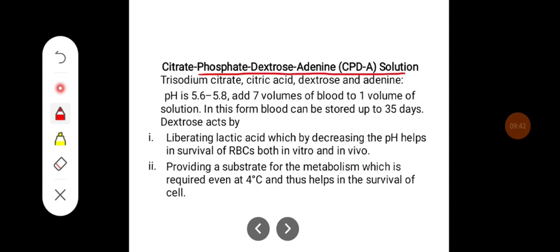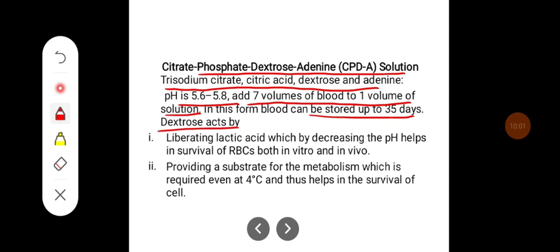Another form is Citrate Phosphate Dextrose Adenine (CPD-A) solution, containing sodium citrate, citric acid, dextrose, and adenine, with a pH between 5.6 and 5.8. You add 7 volumes of blood to 1 volume of solution, and this form of blood can be stored up to 35 days.